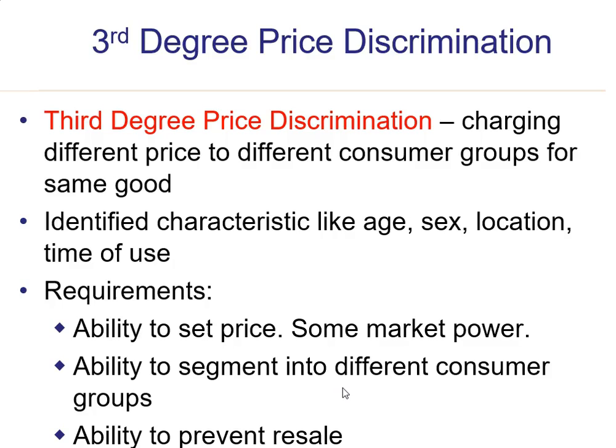Third and finally, you have to prevent the resale of the item. You can't allow one group to turn around and sell it to another group, because then that higher-value group wouldn't buy from you — they'd buy from someone else at a lower price. So you can't let them resell it.